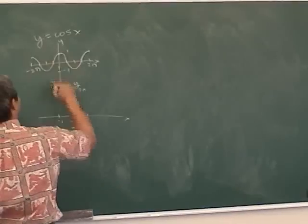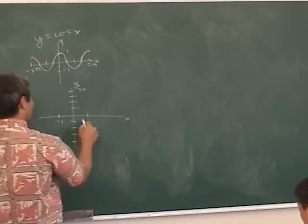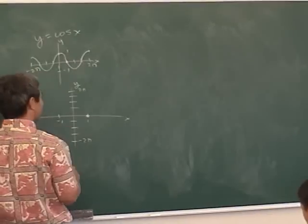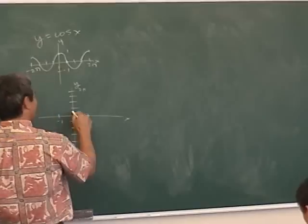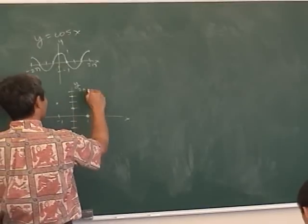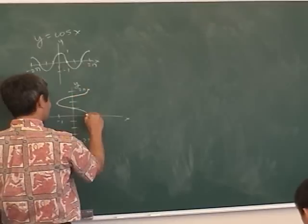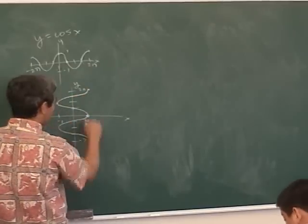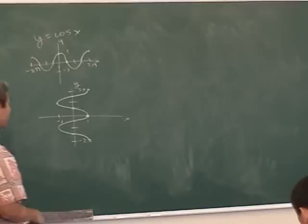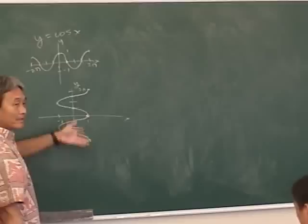What are the coordinates of this point? Zero, zero, one. So if I switch it, you get one, zero. This point is pi over two, zero, so if you switch it, it's zero, pi over two. If you just keep switching the x and y coordinates, you get a graph that goes like this, where it keeps on going forever up and up.